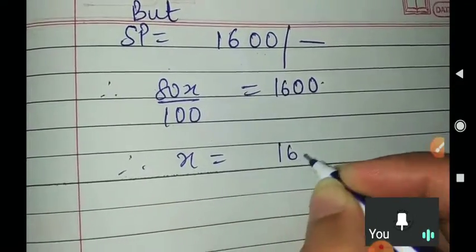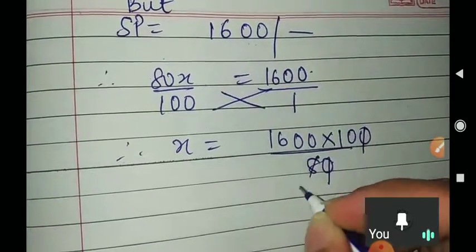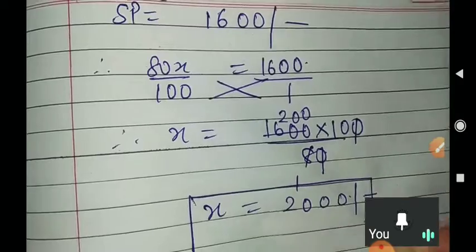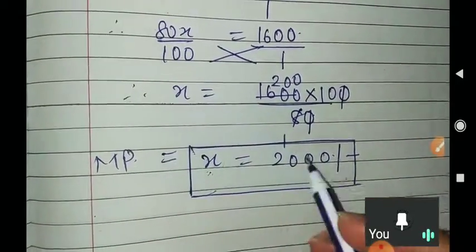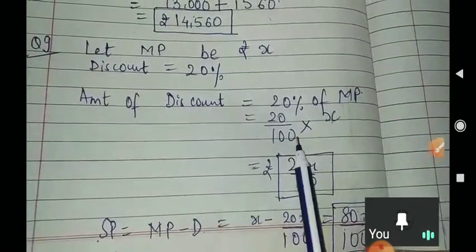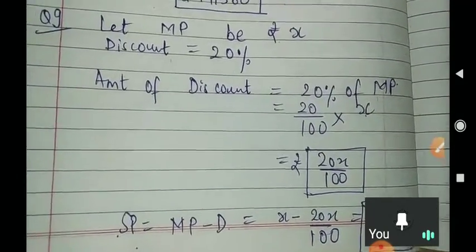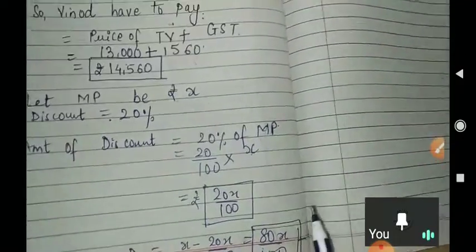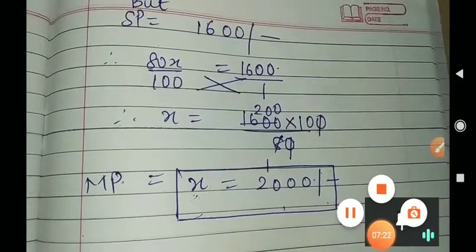If we solve for X, by cross multiplication: X = 1,600 multiplied by 100 upon 80, zeros cancel, giving X = ₹2,000. So the marked price of the skates is ₹2,000. MP was not given; the selling price Arun paid was ₹1,600 with a 20% discount. We assumed MP = X, found discount, calculated SP = 80X/100, set it equal to 1,600, and got X = ₹2,000.